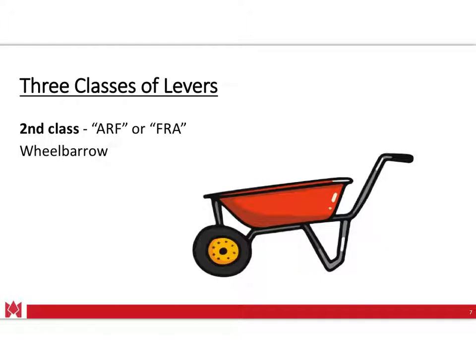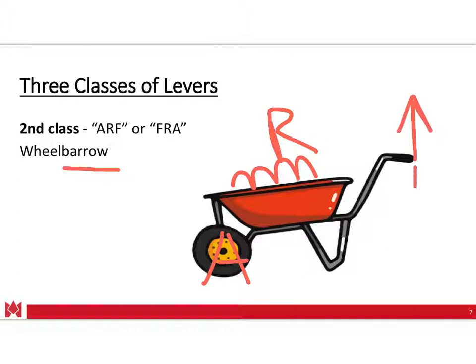Moving to a second class lever — a lot of people describe this like a wheelbarrow. The wheel point is the axis or fulcrum. Whatever is in the wheelbarrow is the resistance, and the handles are the force being applied. Depending on the distances involved, this can be a highly advantageous mechanical position, similar to a car jack. Using a longer lever far from the fulcrum generates a lot of force. This type of lever system can generate a lot of power.